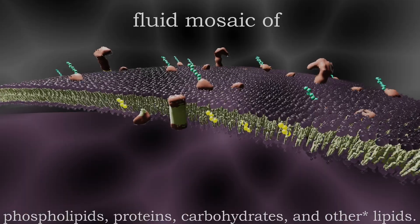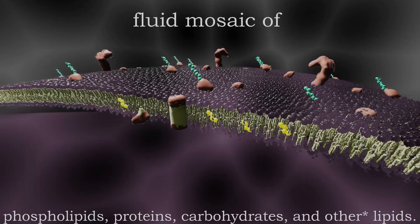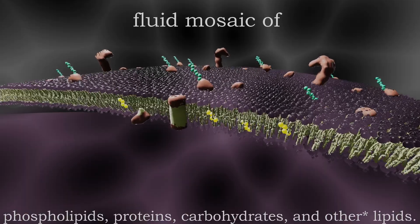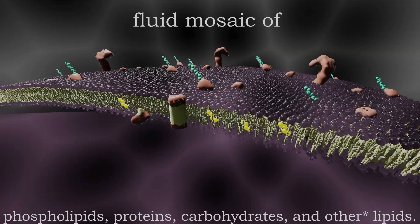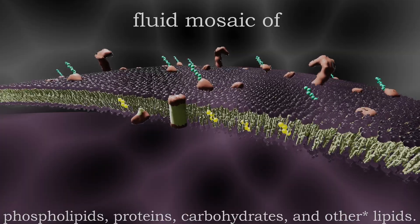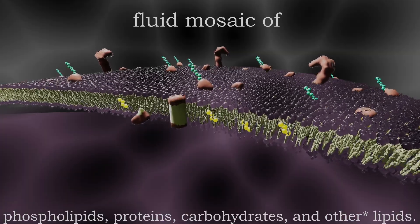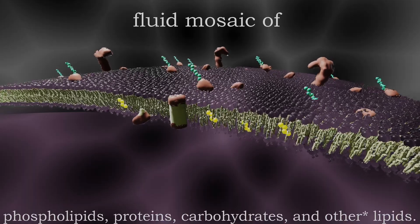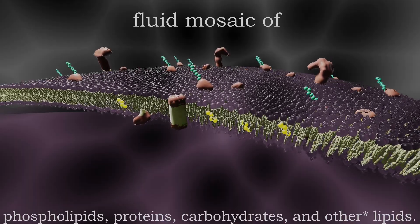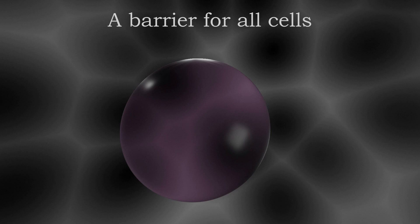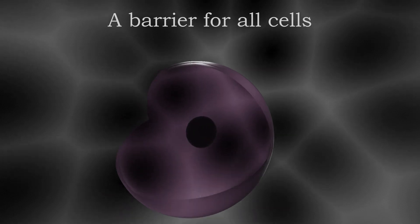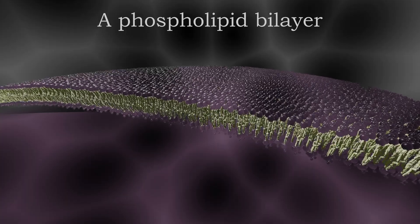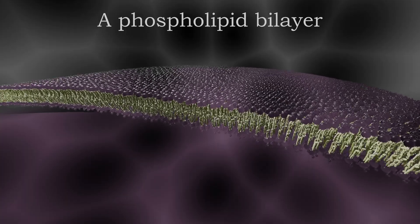Now this definition looks like something you'll see in a textbook, but we're going to unpackage that. We're here to get a complete understanding, so we're going to go straight to the point. The plasma membrane is a barrier for all cells, and it's mainly going to be composed of a phospholipid bilayer.